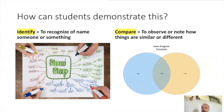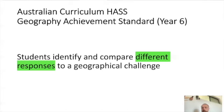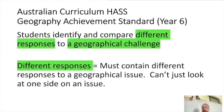Now that we've defined the cognitive verbs in the achievement standard, we need to identify any key terminology — this is what goes into the mind map and Venn diagram. Rereading the achievement standard: students identify and compare different responses to a geographical issue. It's telling us we need to define what 'different responses' means. Students can't be at standard if they just look at one side of an argument.